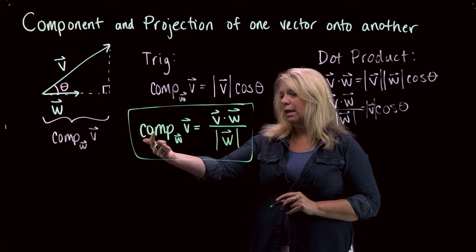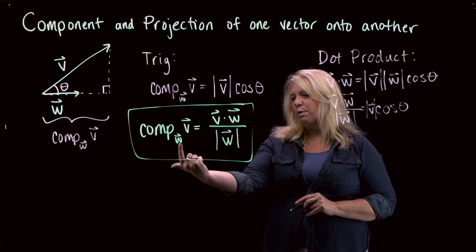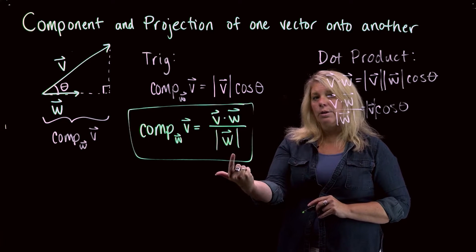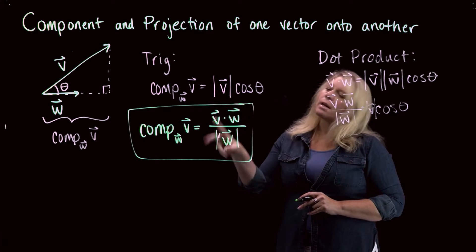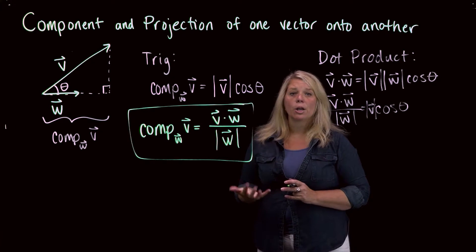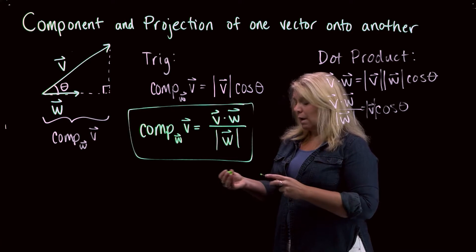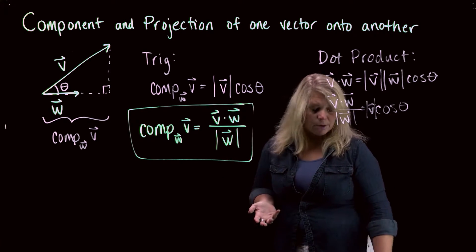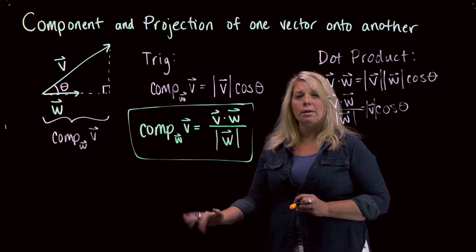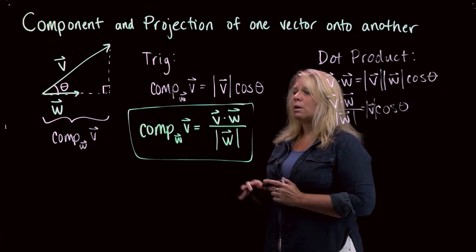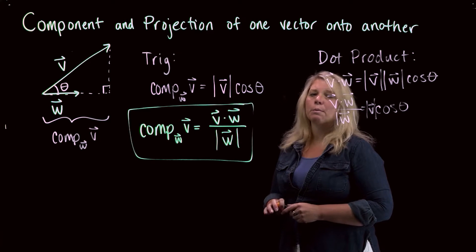In the notation, the component of V onto W — the subscript vector is the vector you're projecting onto, and that's the magnitude you divide by. This picture I drew is for an acute angle, so we have a right triangle. But we also know there might be an obtuse angle between two vectors, so I want to draw another picture with an obtuse angle and label what's happening there.